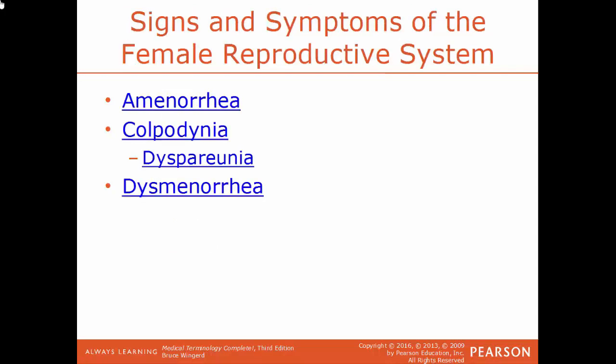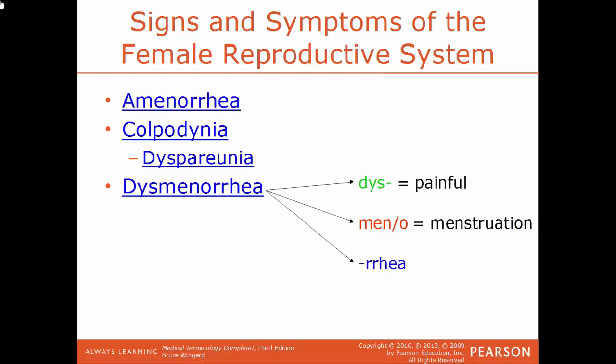Now we'll talk about some signs and symptoms of the female reproductive system. Amenorrhea is an abnormal absence of menstruation — one or more missed periods. Colpodynia is a reference to having pain in the vagina. Dyspareunia is having difficult or painful sexual intercourse. Dysmenorrhea: dys means painful, meno is menstruation, rrhea is a discharge — so dysmenorrhea is having a painful menstruation.